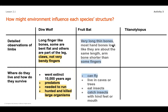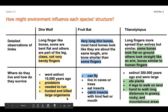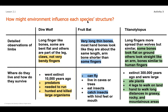Now take a look at the fruit bat and the titanolophus. I highlighted some things that may be pieces of the environment that influenced those species' structures. Go ahead and pause - you may want to jot this down and answer this question: what are some pieces of the environment that could have influenced the specific structures of those species' limbs? We did the wolf together, and you may want to write down your answer. Go ahead and pause and think about the fruit bat and the titanolophus.